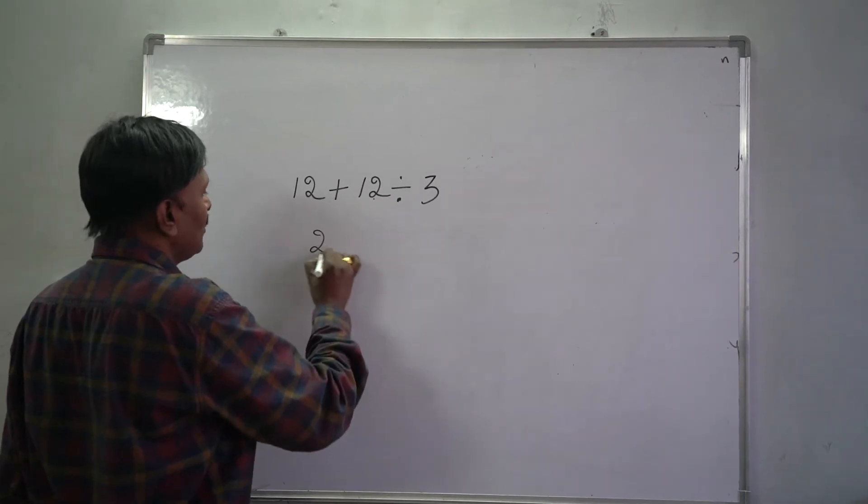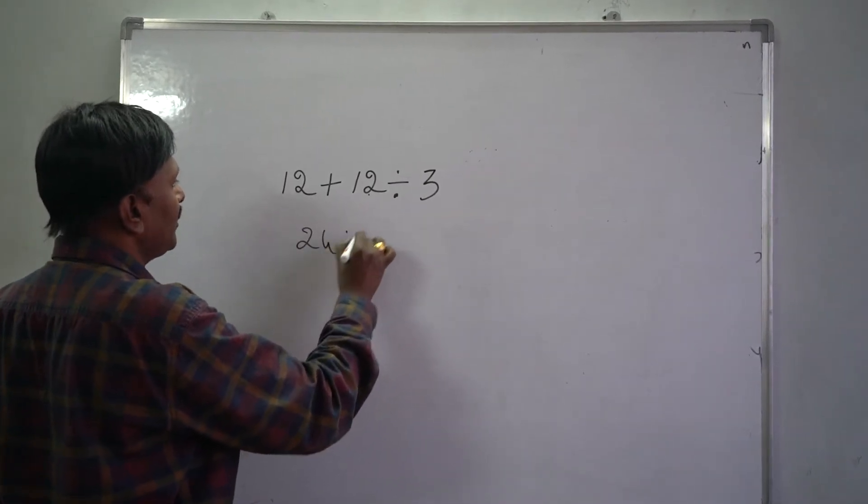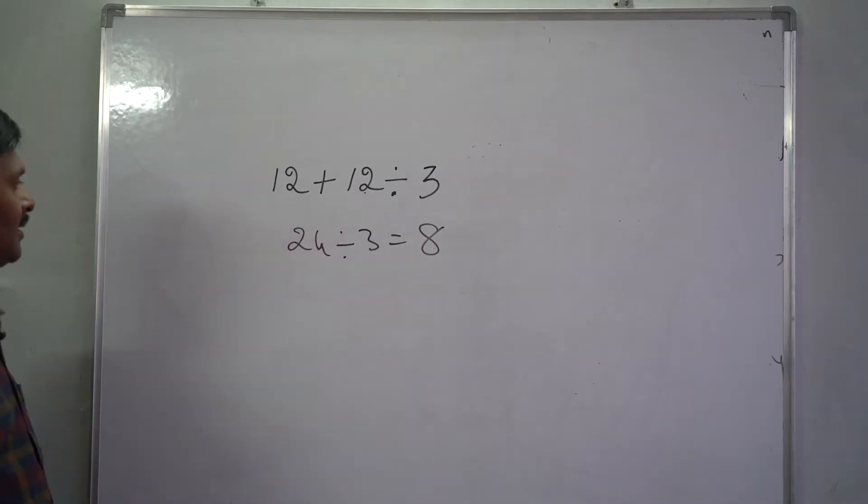12 plus 12, 24 divided by 3. How much is this? 8, right?